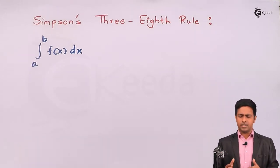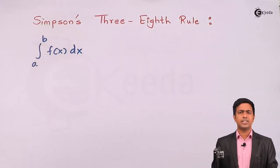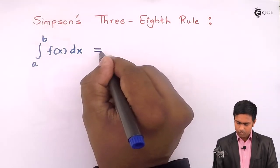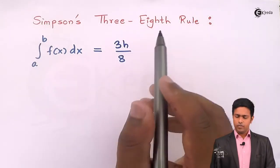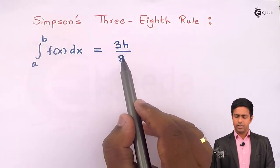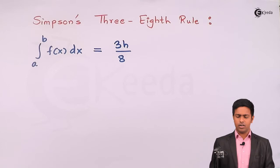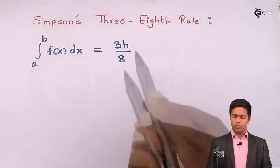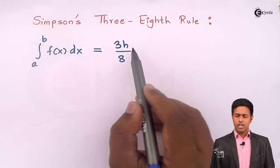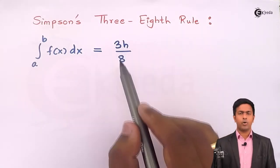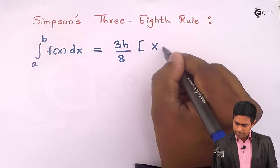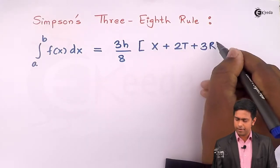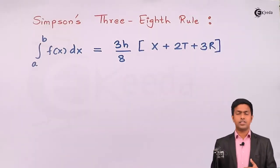So what is the formula — the numerical method formula — to get the answer of the integration? It is three h by eight. Since it is the three-eighth rule, we have three upon eight with h. We have also seen a rule called Simpson's one-third rule, where we say one upon three times h. For the three-eighth rule it is three upon eight times h, and then we have X plus two T plus three R.